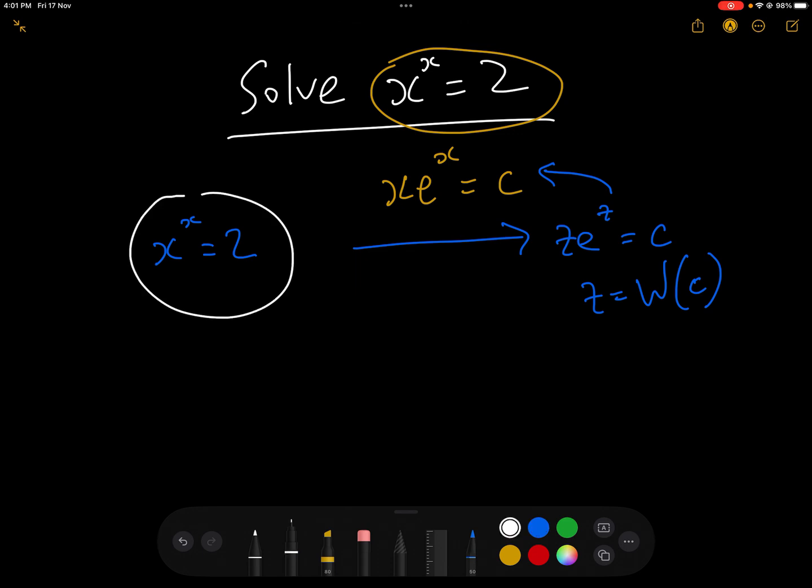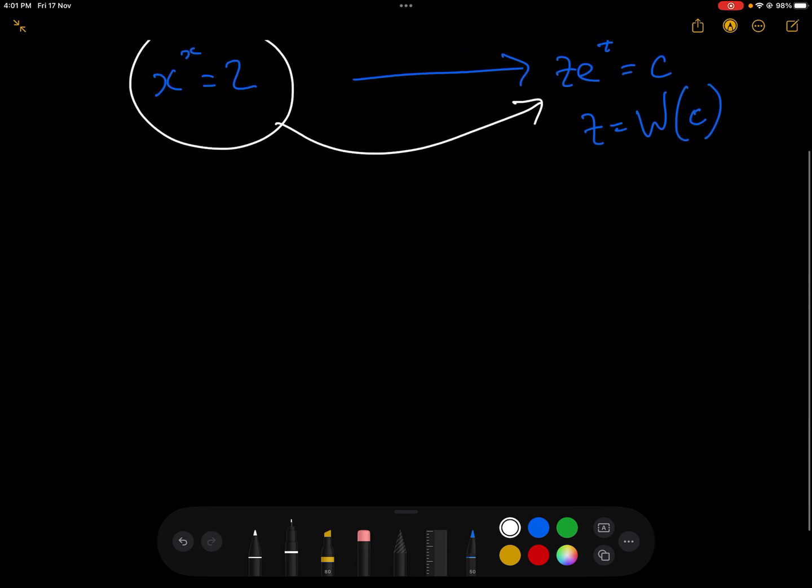So how do we get x^x = 2 into the form z*e^z = c? The first thing we want to do is take logs of both sides, so x*log(x) = log(2). That's just taking logs of both sides and moving the x down.